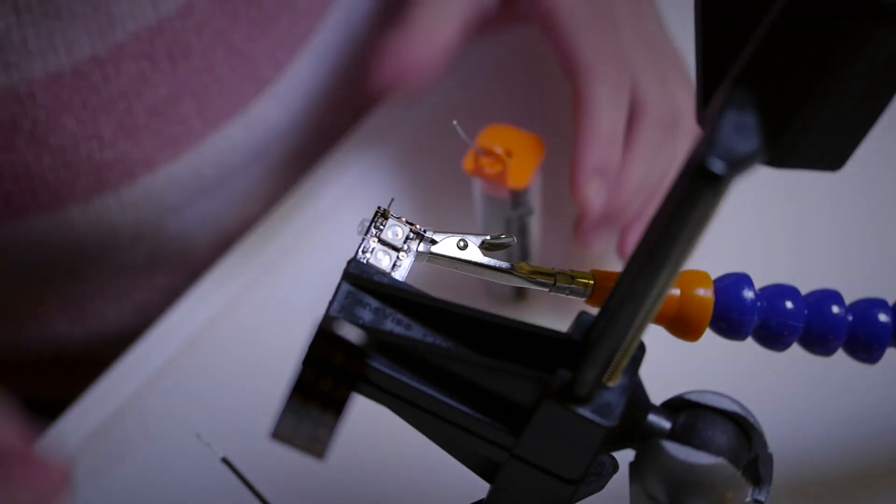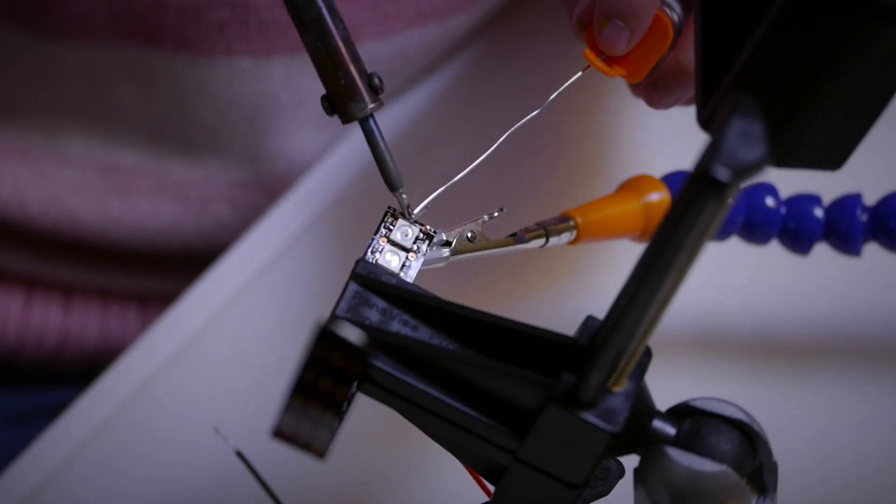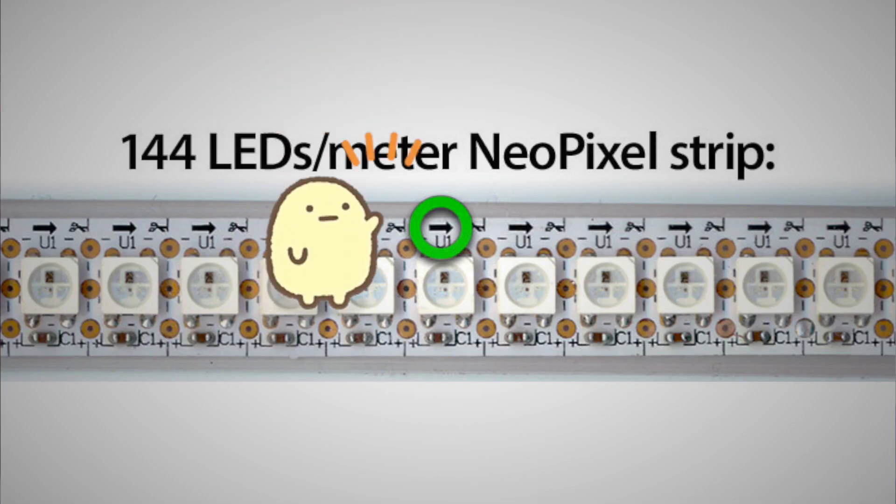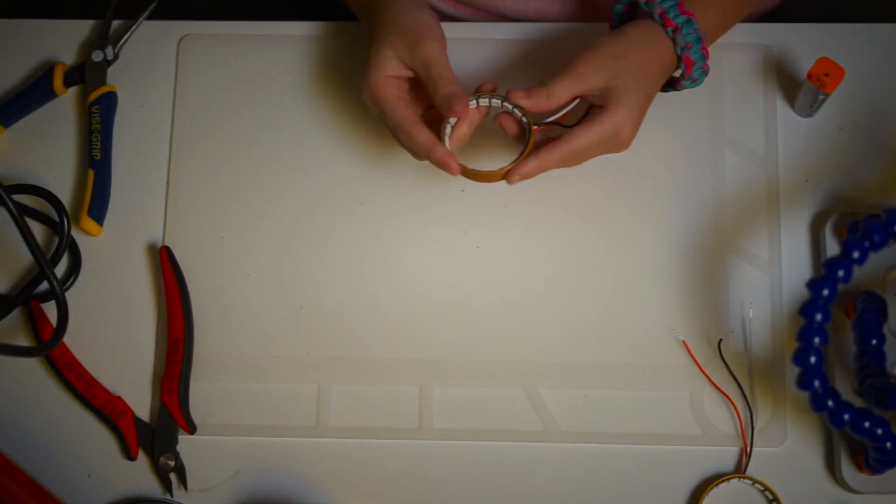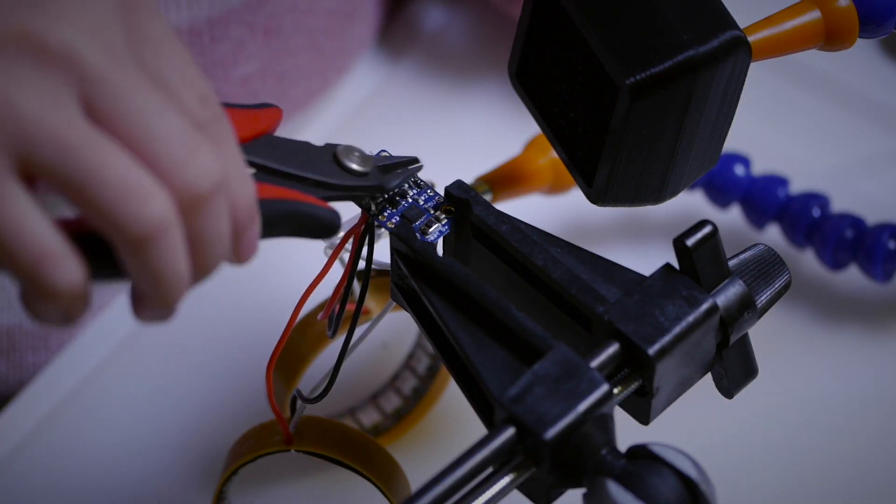You will need about 13 to 14 cm long strip of LEDs. The data signal is directional, so make sure you are soldering on the right side. The number of LEDs on the strip don't matter, but the more LEDs, the better the effect.